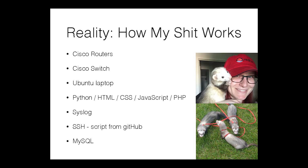So I ended up changing the reality of how my system works. I used Cisco routers, Cisco switches, an Ubuntu laptop, Python, HTML, and all that cool stuff. I actually got a script from GitHub called iOS config fetch that downloads the configs for me, so I didn't even have to do that — it was awesome.